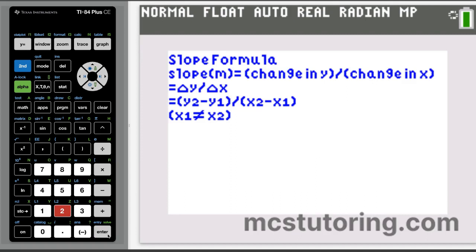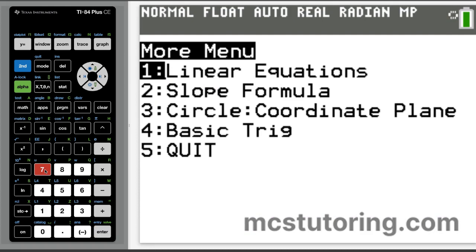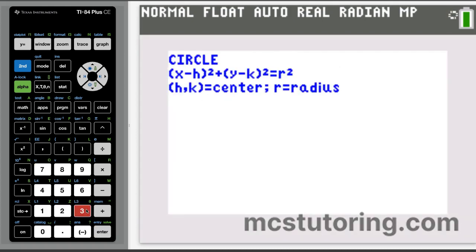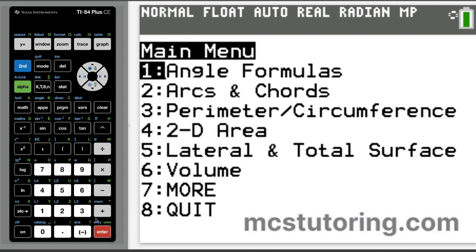And then we go to circle in the coordinate plane: (x-h)²+(y-k)²=r², tells you the center and radius.